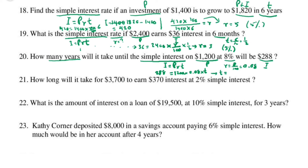To get t alone, divide both sides by 1,200, then divide again by 0.08. That gives t alone on one side. The answer is 3 — t is equal to 3 years.